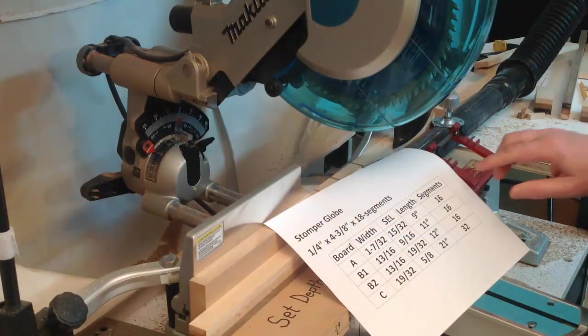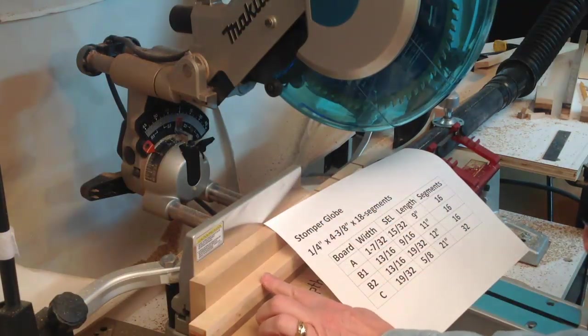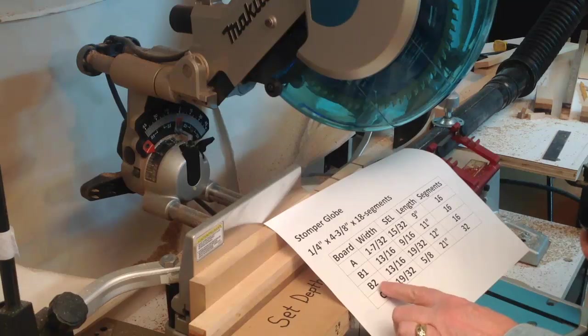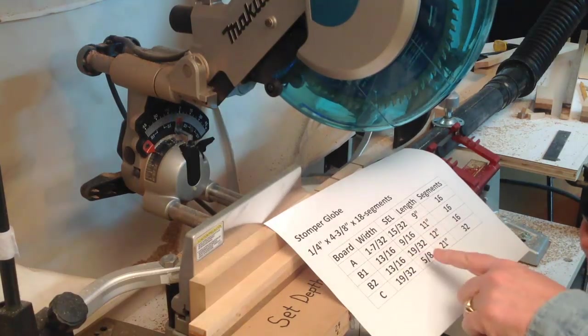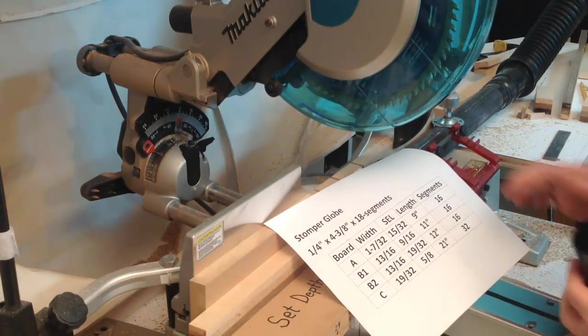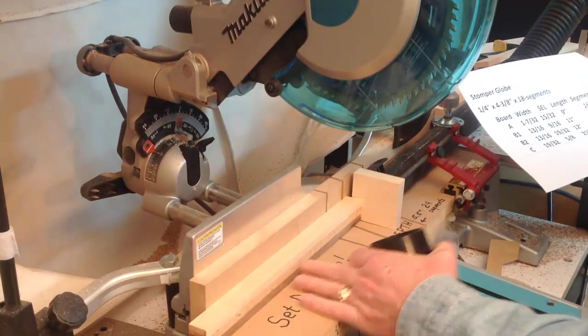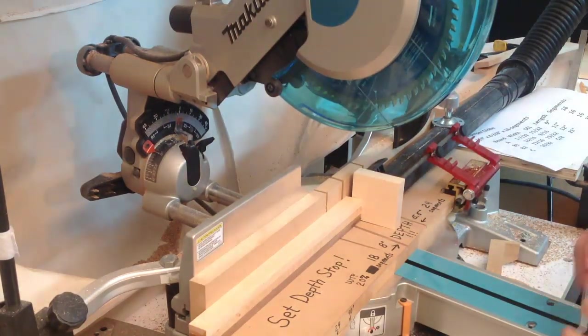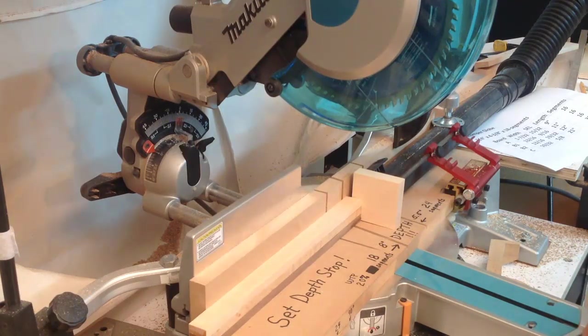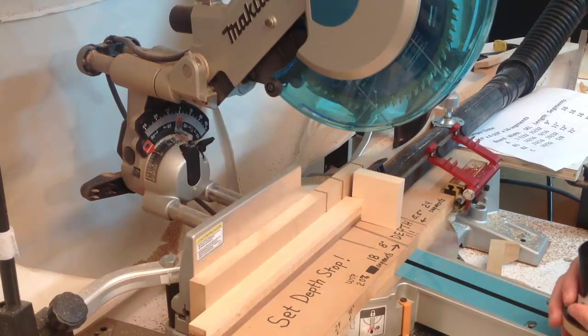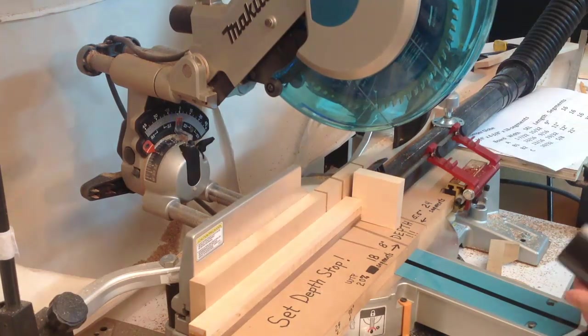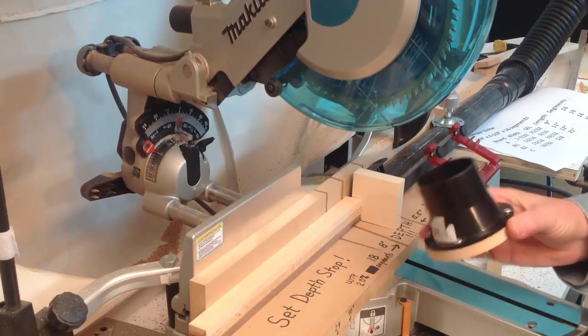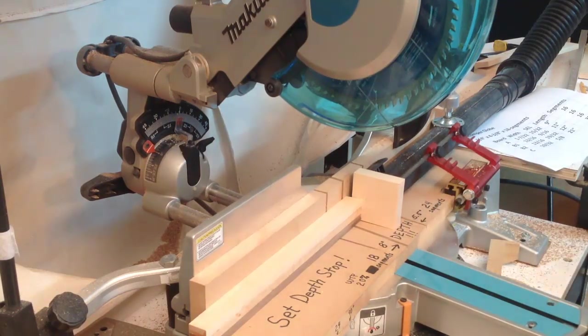So now I've set up the next board, which is our B-width board. It's B2 for the second segment edge length, which is 1932nds. So this is the board we're going to be using. I've got the stop set at 1932nds. And we've got quite a few segments to cut. And so I was thinking, wouldn't it be nice if there was a way, when we cut those, it would be nice if they ended up in something like this.